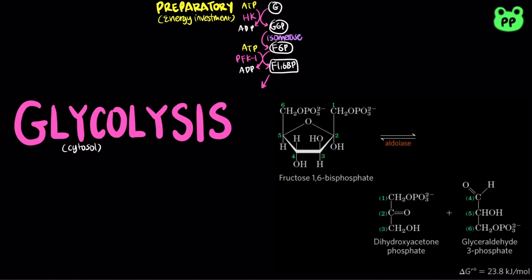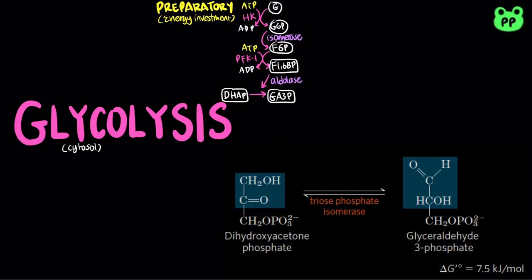Next, fructose-1,6-bisphosphate aldolase catalyzes a reversible aldol reaction that cleaves fructose-1,6-bisphosphate into two different triose phosphates: glyceraldehyde-3-phosphate, an aldose, and dihydroxyacetone phosphate, a ketose. Only glyceraldehyde-3-phosphate can be directly degraded in subsequent steps of glycolysis. Therefore, dihydroxyacetone phosphate is converted to glyceraldehyde-3-phosphate by the enzyme triose-phosphate isomerase.